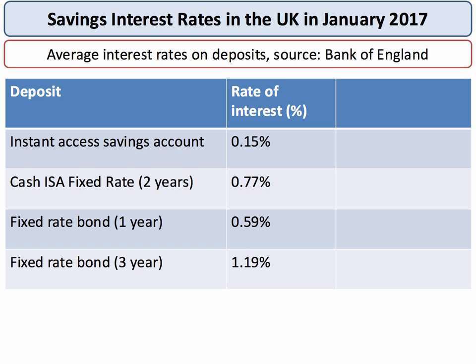A cash ISA is an individual savings account — basically an account that pays interest tax free, as opposed to a normal bank account where you might pay tax on your savings. A fixed rate bond is basically locking your money into a deposit account. If you do that for one year you get 0.6%; if you do it for three years, 1.2%. Either way, the interest rates on savings in nominal terms are pretty dreadful. And if you take inflation away from these interest rates to get the real interest rate, in many cases savers are getting a negative real return on their money.